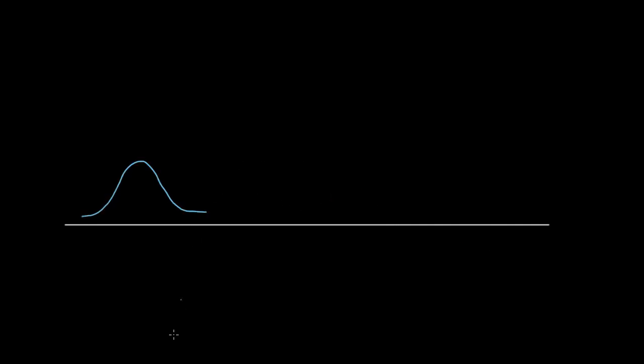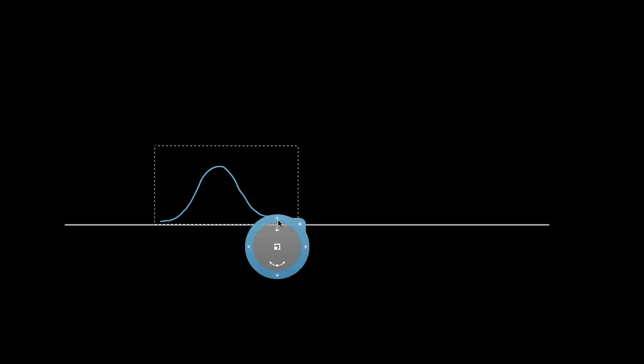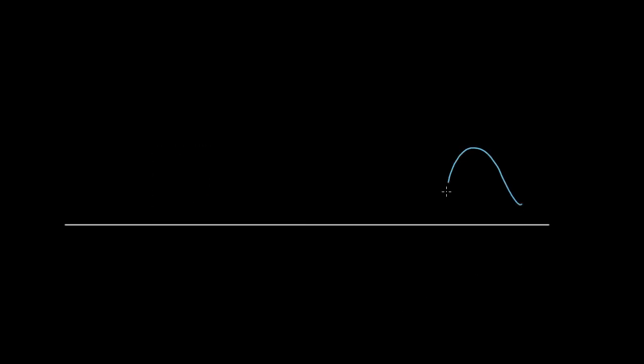Let's say you had a string, and you gave it a little yoink up and down — you'd see a wave pulse travel down that string. But here's a question: if someone else on the other end of the string also sent a wave pulse down the line toward the first wave, what would happen when they overlap?